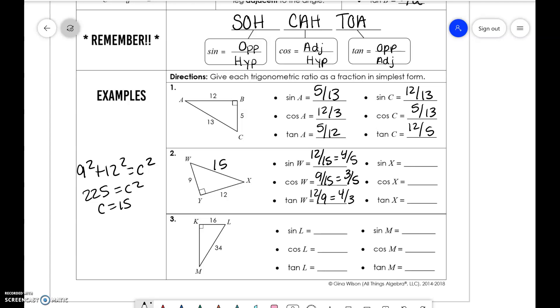And then if we do X, we have opposite over hypotenuse, 9 over 15, which is 3 over 5. 12 over 15, which is 4 over 5. And 9 over 12, which is 3 over 4.